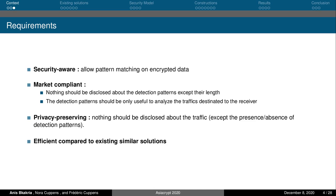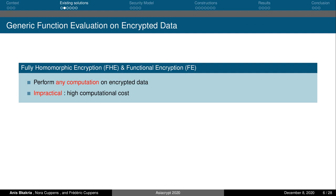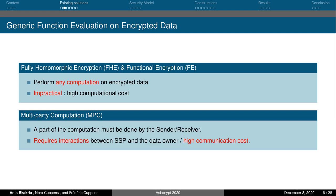Several techniques can be used to perform pattern matching on encrypted data. Generic solutions such as fully homomorphic encryption and functional encryption can be used, but these techniques are impractical because of the high cost of the computation they require. Multiparty computation can also be used to perform interactive computation on encrypted data. However, performing pattern matching using multiparty computation requires a high number of interactions that is, in the worst case, linear to the size of the data, which results in very high communication costs.